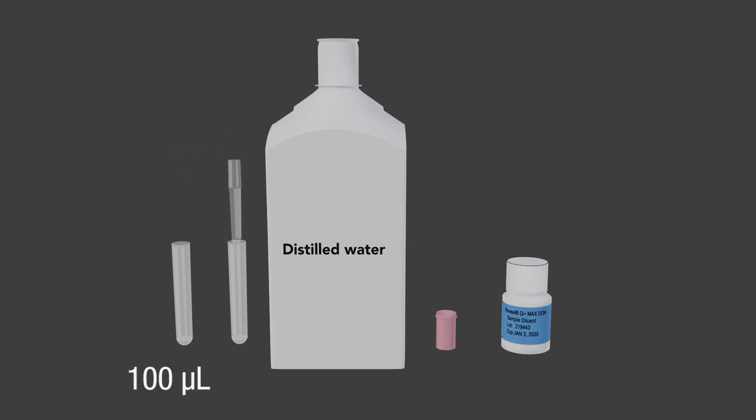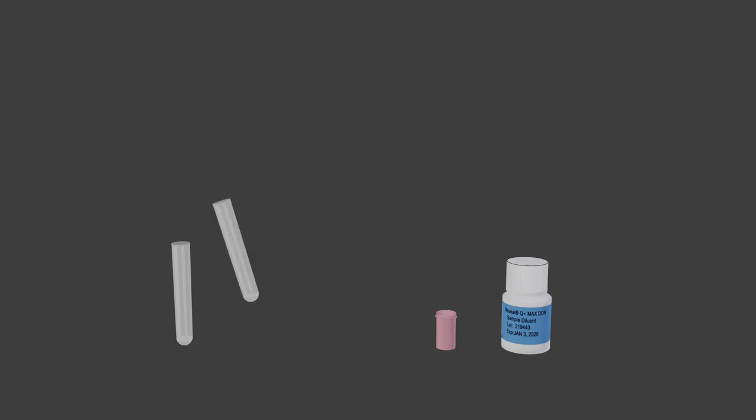Add 100 microliters of sample filtrate to a sample collection tube. Add 500 microliters of distilled water and mix well. Transfer 100 microliters of the sample dilution to a red dilution cup. Add 1000 microliters of sample diluent and mix well.